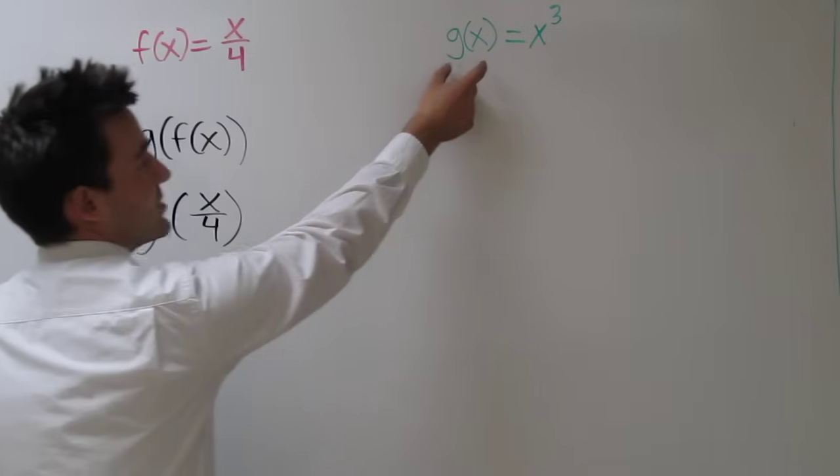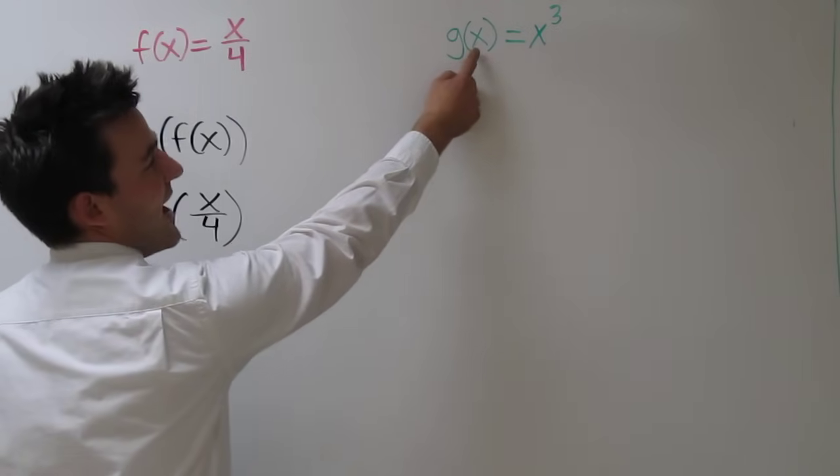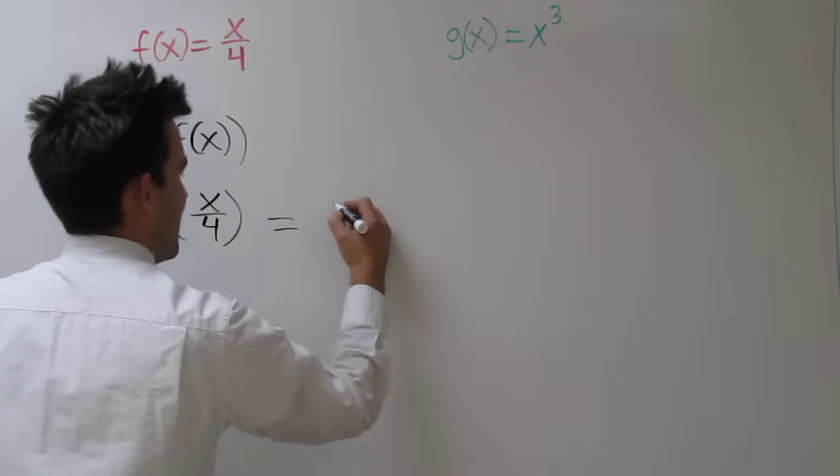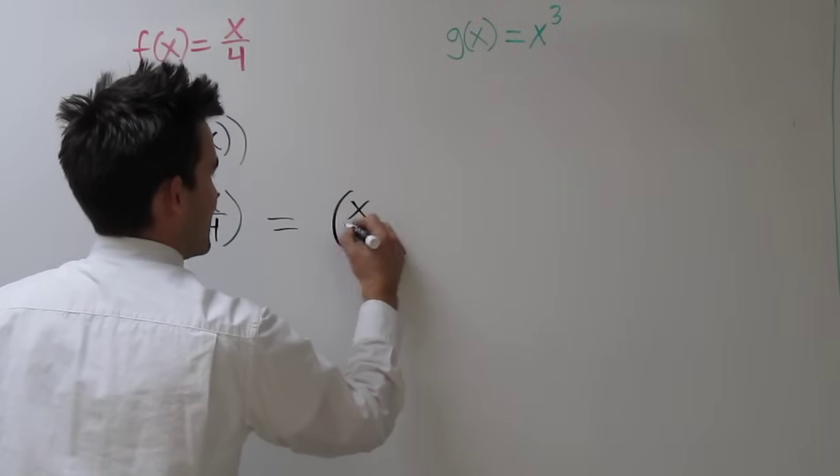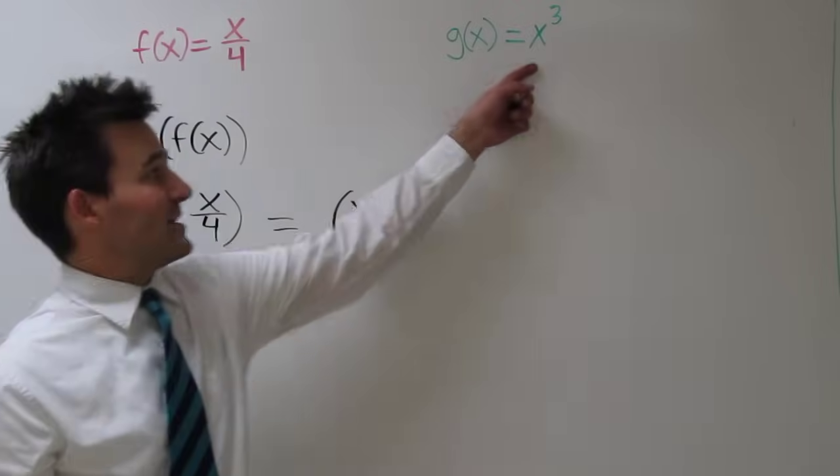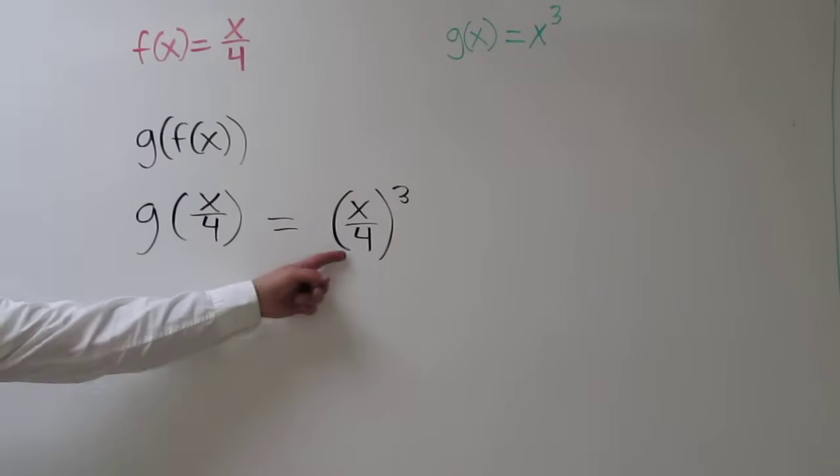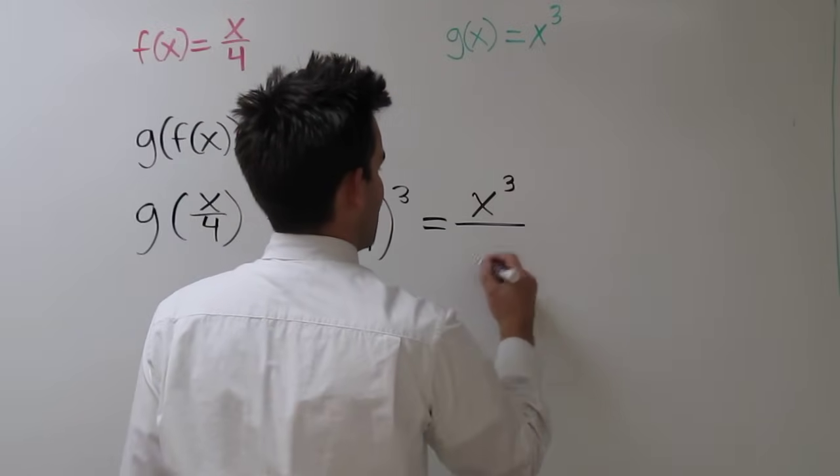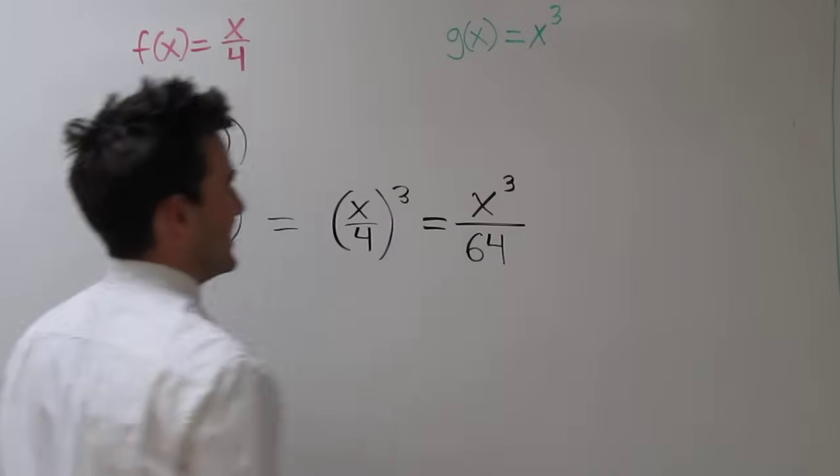Now we need to look at the g function. Everywhere we see an x, we need to write an x over 4. So g of x over 4 is x over 4 cubed. Since x was being cubed here, we must now cube x over 4. x over 4 cubed is x cubed over 64.